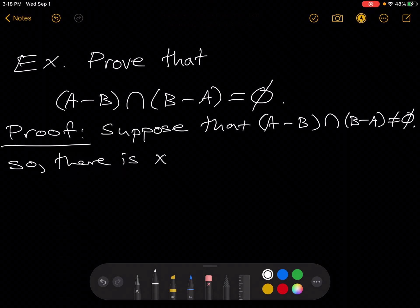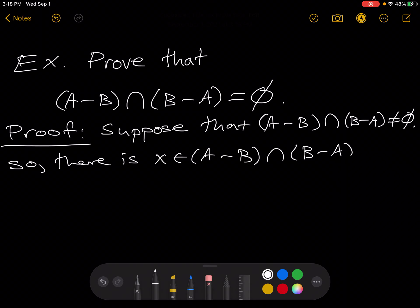So there is x in A minus B intersected with B minus A. So then you want to ask yourself, what does that mean? Let's unravel that. Let's unravel first the intersection because that's the thing in the middle there.